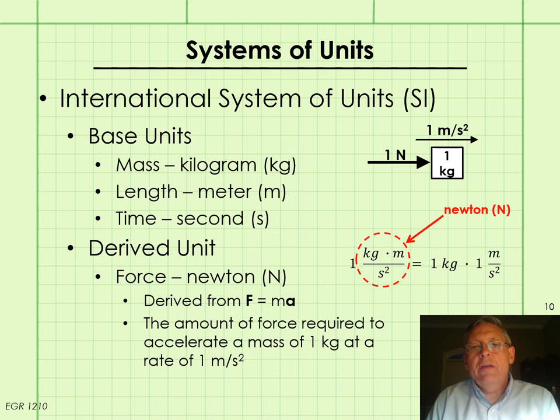Engineers in the U.S. have to be fluent in two different systems of units. I'll talk first about the International System of Units, SI, commonly called metric. I talked earlier about the four basic quantities that we use in mechanics, mass, length, time, and force. In SI, mass, length, and time are known as base units. They're given to us, and we know them as the kilogram, the meter, and the second. And force is what's known as a derived unit, and we know force in SI as the Newton.